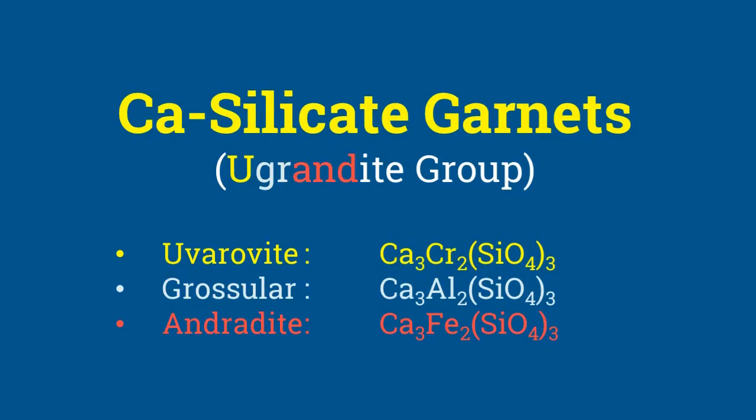The calcium silicate garnets have the end members uvarovite, grossular, and andradite, and together these subspecies are called the ugrandite group. Notice that all of these minerals have calcium and silica in common.